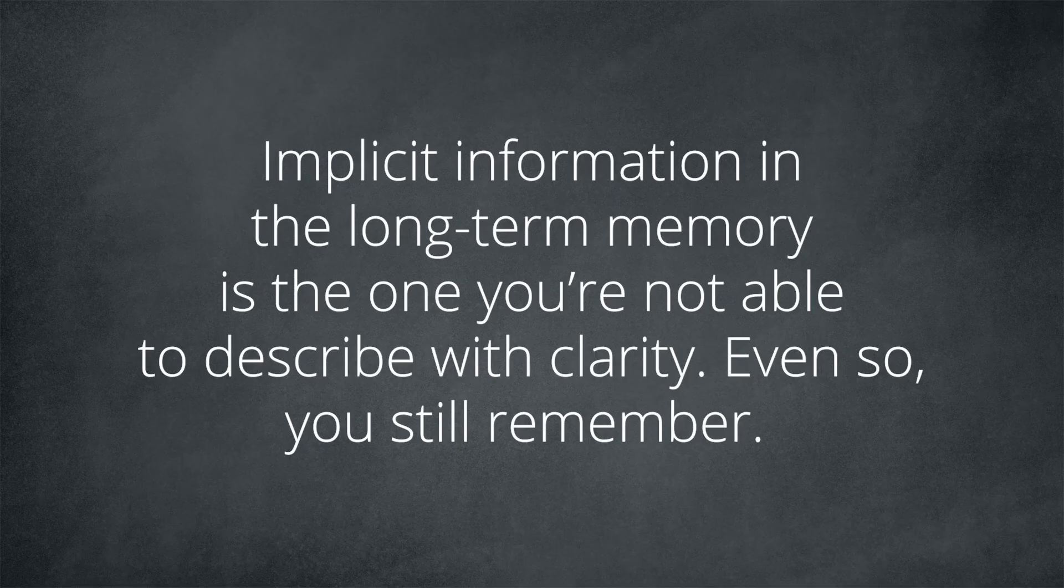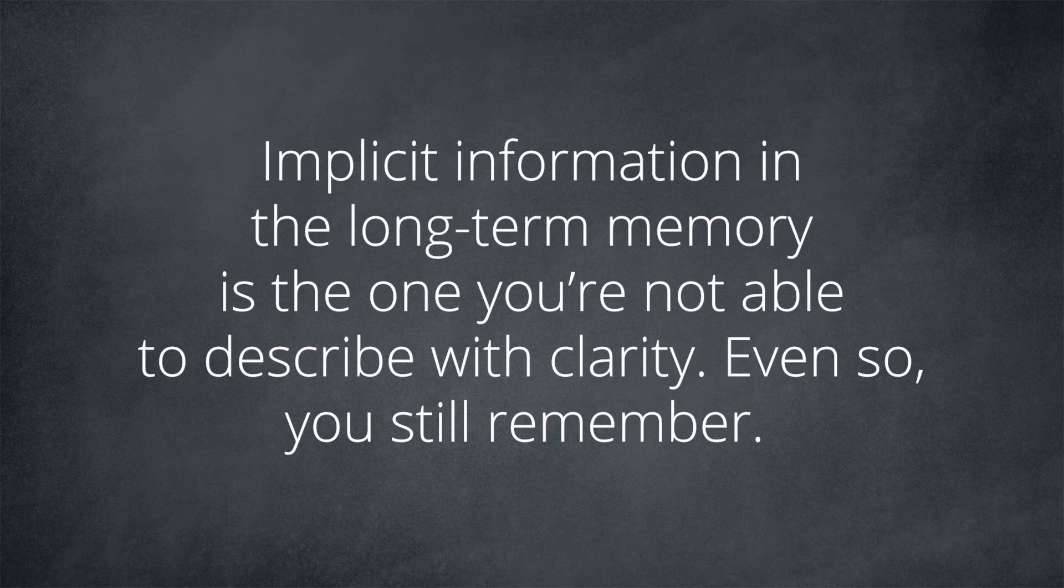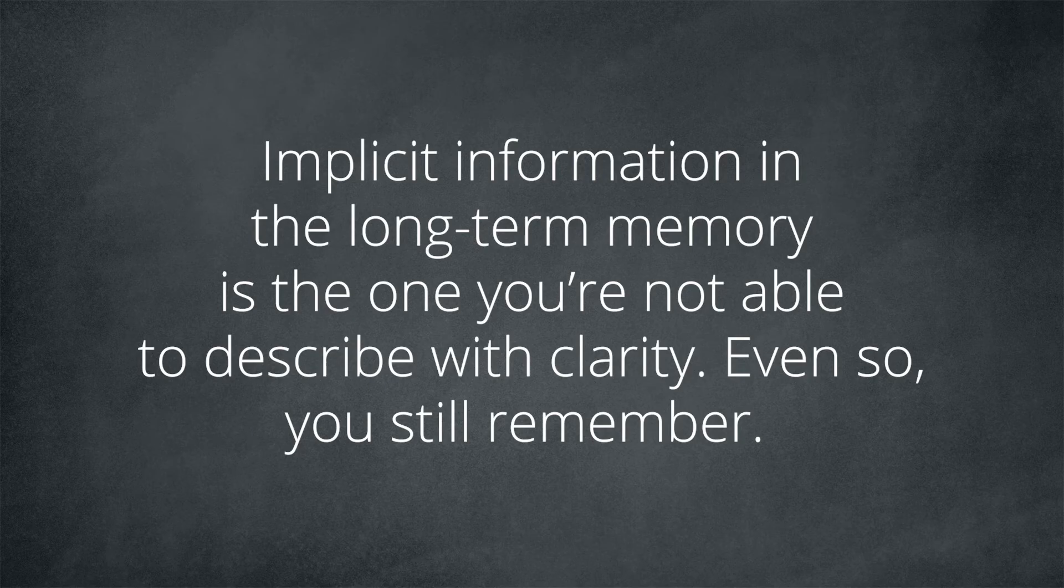Implicit information in a long-term memory is the one that you are not able to describe with clarity. But even so, you still remember. The implicit information in a long-term memory is also called non-declarative. They're named like that because you're not able to exactly explain, to declare, to describe how you remember that information. Nevertheless, you remember. It's like saying that you got a bad grade in the exam because you didn't know how to answer the question, but you swear you knew about that topic. Maybe you actually knew, but in an implicit way, not explicitly. Implicit information in a long-term memory is also divided into two subcategories, procedural memory and priming memory.